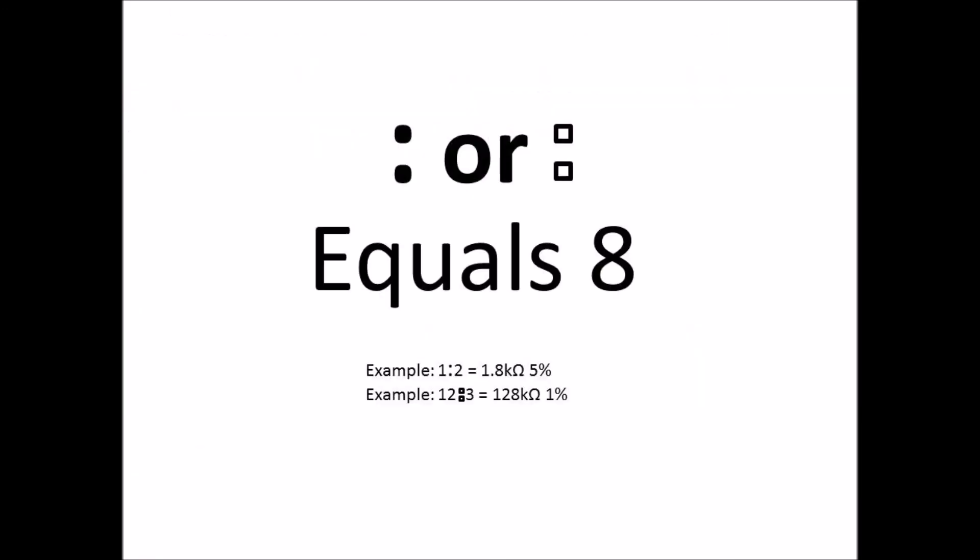I also found a website that showed a colon or two squares stacked on top of each other is equal to the number 8. And I gave a couple examples there of 1 colon 2, which would be 1-8 with two zeros at the end, so 1.8 kilohms, and since it's a three-digit resistor, it would be 5% tolerance.